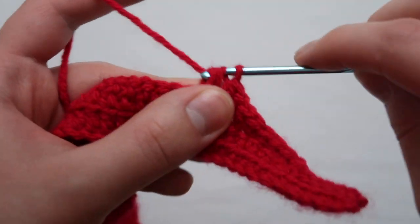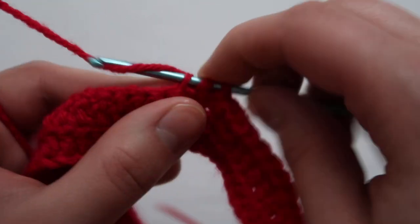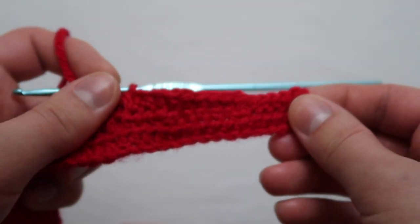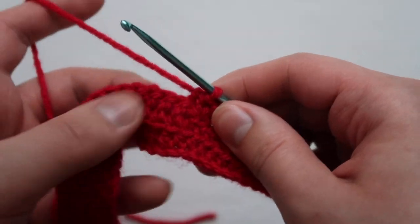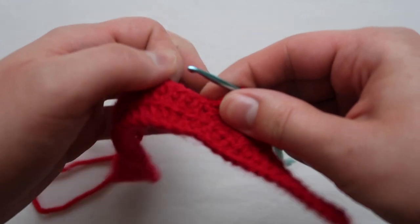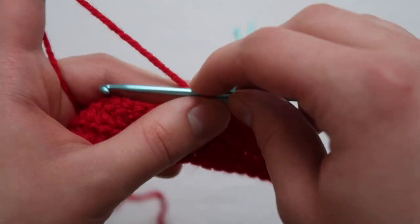Once I get done with my five half double crochet, I like to add a little marker. It's just a little piece of yarn in a contrasting color, just so I know when I'm coming back going the other way where to start with the half double crochet. Half double crochets and double crochets do look similar and I don't want to have to count every single time.